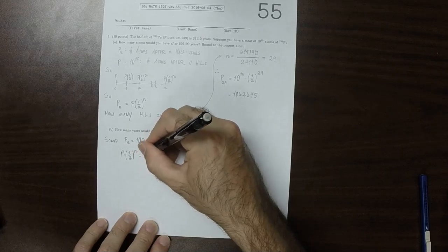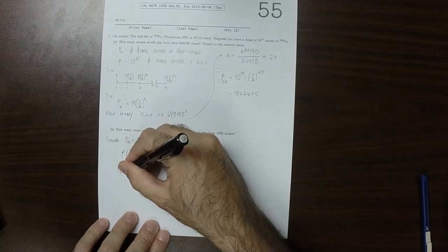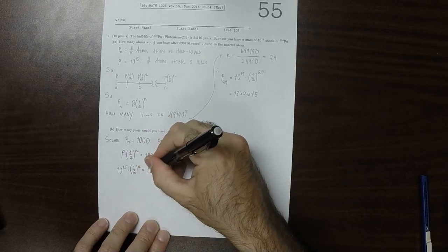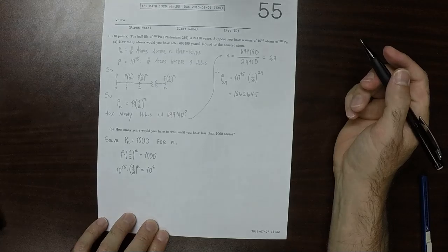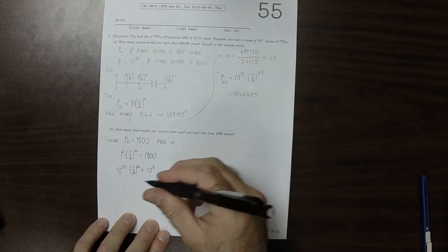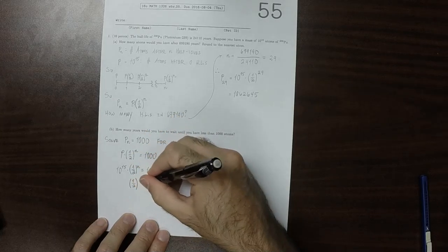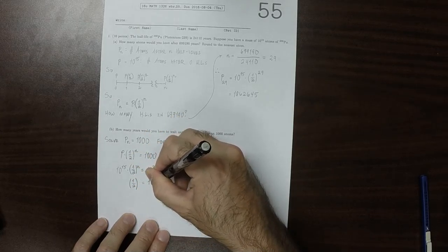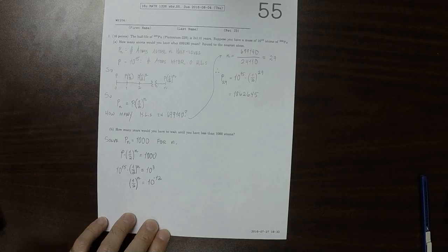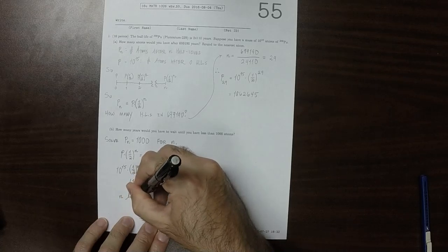So that would be P times one-half to N equals 1000. So that would be 10^15 times half to N equals 10^3, because 10^3 is a thousand. If we divide both sides by 10^15, that would say half to N equals 10^-12.